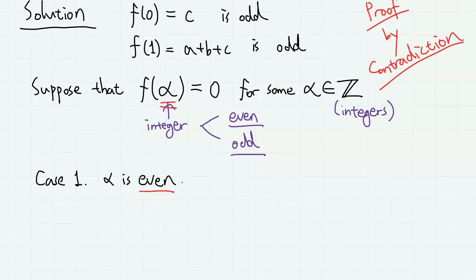So first case, when alpha is even, then we can write alpha as 2n for some integer n.